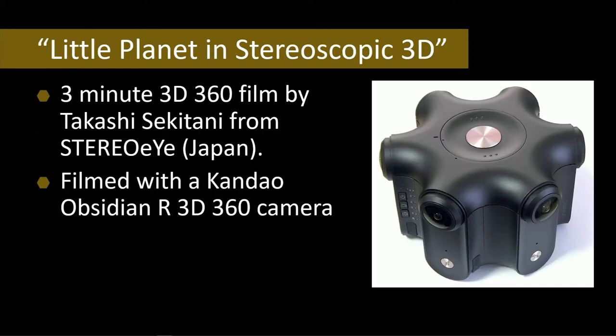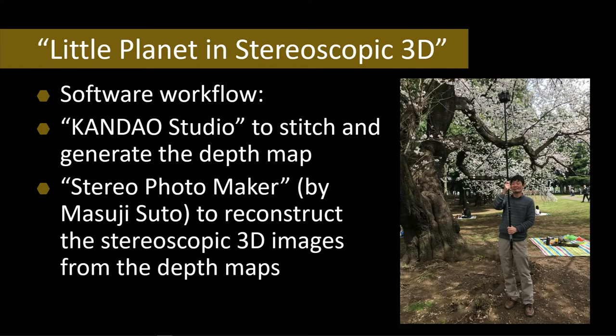The second film is a piece by Takashi Sekatani from Stereo Eye in Japan, called Little Planet in Stereoscopic 3D. It was filmed with a Kandao Obsidian R3D 360 camera — similar in many respects, with six lenses around a horizontal axis recording continuously. The software workflow in this case is very different: Takashi used Kandao Studio to stitch the footage and also generate a depth map, which is the critical difference between the two approaches.